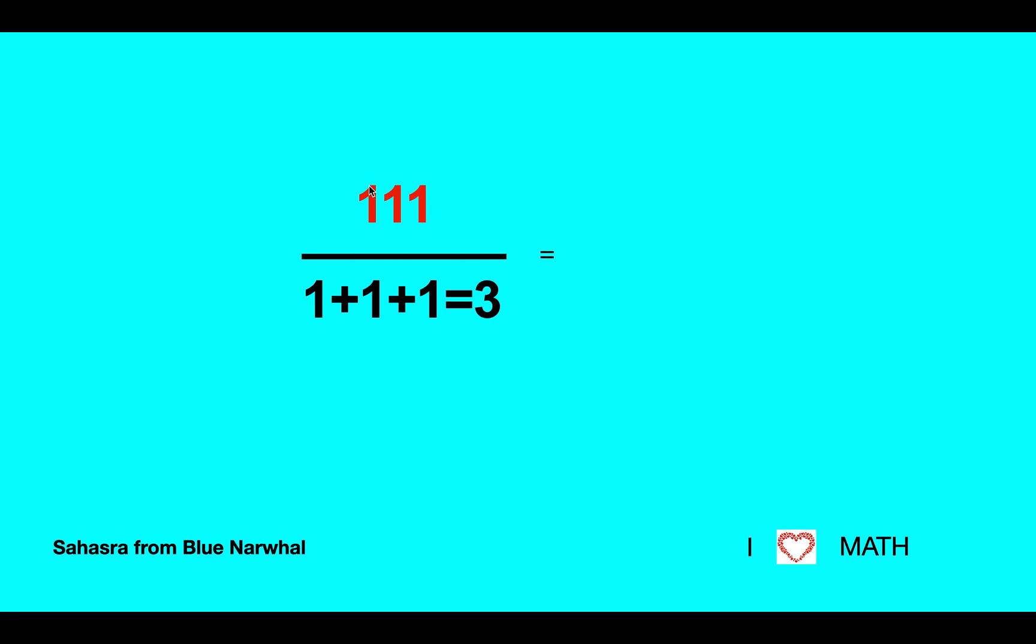First of all, I have 111 here. I have three ones, and I'm going to add those three ones together, and that equals three. Then I'm going to divide 111 by this three, and that equals 37.